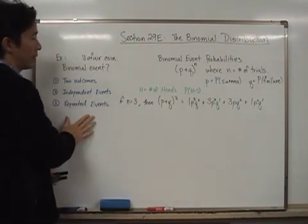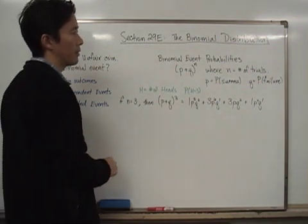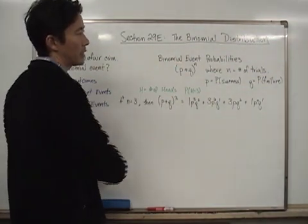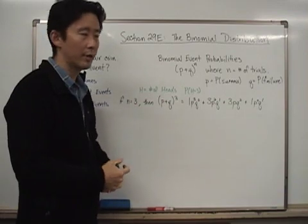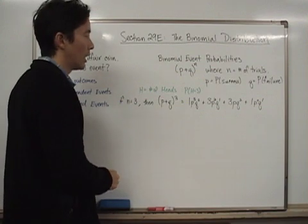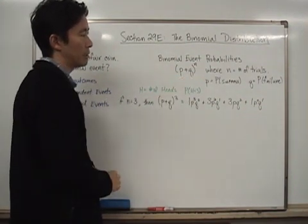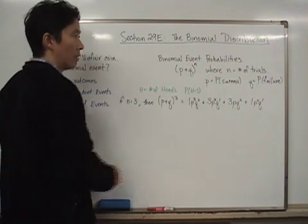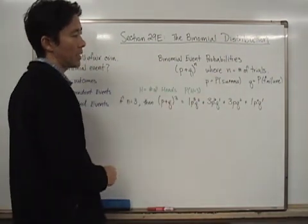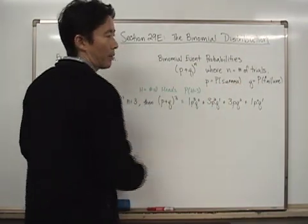So being that we know we have a binomial event, we can then talk about calculating the probabilities. And we did this already in the chapter on probability, where we said that if we look at the expansion of p plus q to the n, where n represents the number of trials and p represents the probability of success, q represents the probability of failure.